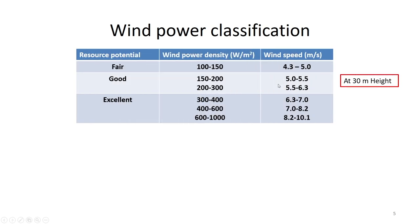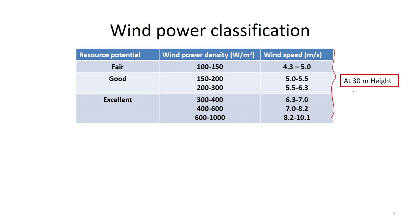Based on wind resources, we can also classify sites. If wind power density is in the range of 100 to 150 W/m² and wind speed is about 4.3 m/s, measured at a hub height of 30 meters, we call it a fair wind power resource. A wind power density of 150 to 300 W/m² with wind speed 5 to 6.3 m/s is a good resource, and 300 to 1000 W/m² with wind speed 6.3 to 10 m/s is classified as excellent.